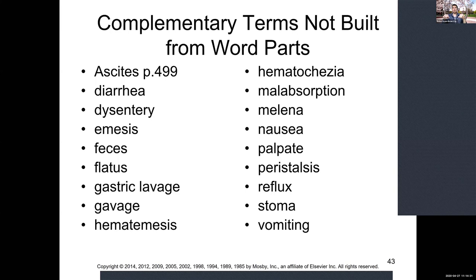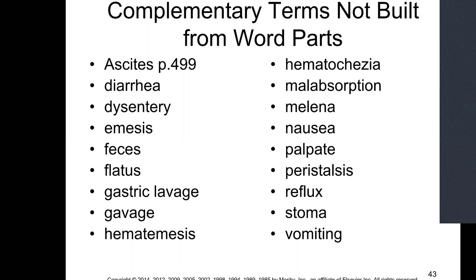We've covered many of the abbreviations as we went through the chapter. Common ones include GERD, ERCP, A&P, GI for gastrointestinal, IBS for irritable bowel syndrome, nausea and vomiting, PEG tubes, and the FOBT. That finishes chapter 11.